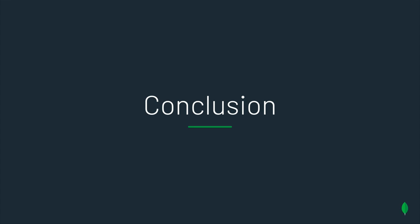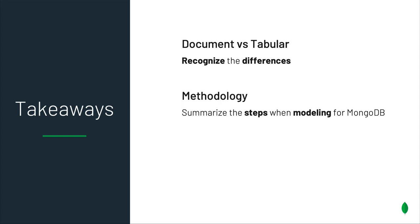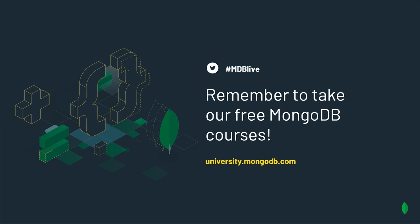That brings us to the conclusion. The things I want you to remember from this talk: first, really understand the difference between the document database and the tabular database so you can have a good mental model when working on your schema. Second, the main steps to modeling: it's very important to understand your workload at the beginning, you still need to understand the relationships and model them, and then apply patterns for better performance. And before we leave, we do offer classes on everything MongoDB — from aggregation, replication, sharding, and data modeling — at university.mongodb.com. Classes are free and it's the best resource to learn about MongoDB. Thanks for listening. See you around.